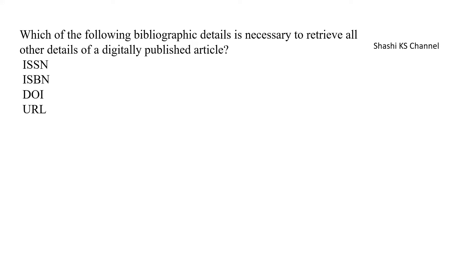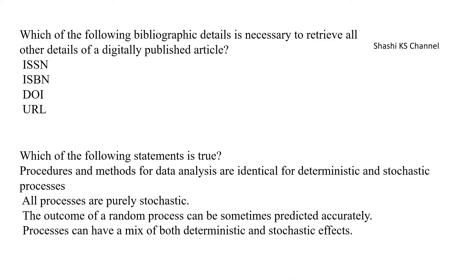Question 3: Which of the following bibliographic details is necessary to retrieve all other details of a digitally published article? Options: ISSN, ISBN, DOI, or URL. The answer is DOI, which stands for Digital Object Identifier.